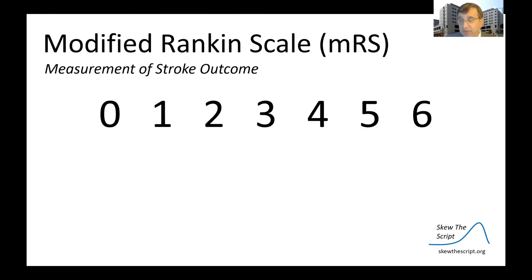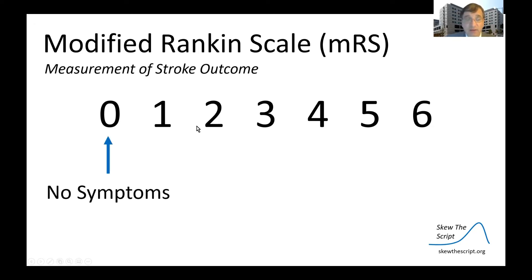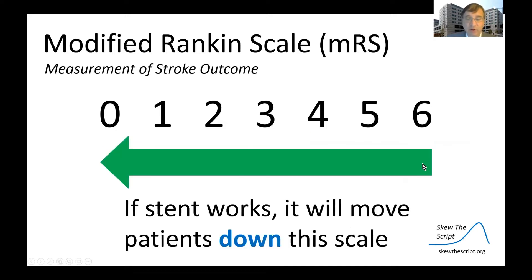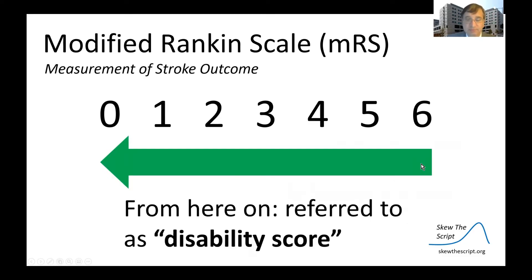In this study, we measured patient outcome using the modified Rankin scale of global disability. This has seven levels. A score of zero is the best — no symptoms. A score of four means markedly severe disability, where someone needs assistance from another person to walk. A score of six means the person died. So if the stent works, it will move patients down this scale.